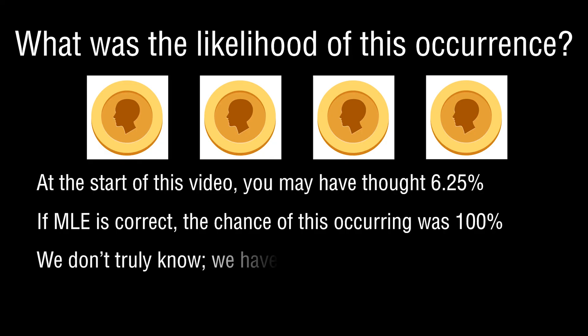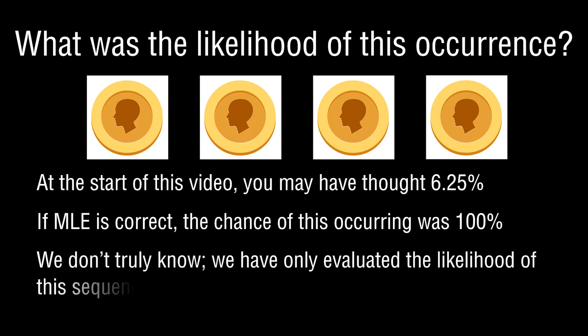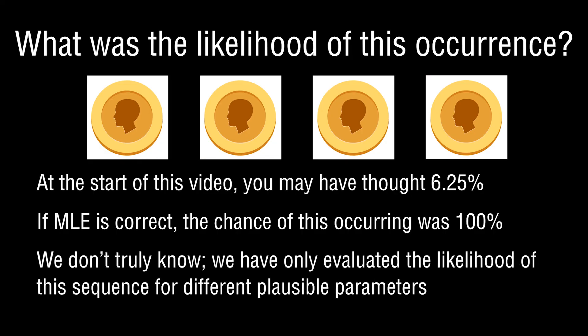Here is probably the most frustrating aspect: at the end of this analysis we actually don't truly know with 100% certainty the true nature of this coin. Yes, we've come up with a likelihood function that can help explain the likelihood of this sequence as a function of the nature of the coin, but there is a non-zero likelihood of four heads showing up for all values of p — except for one: p equals zero, the case of a tails-tails coin.